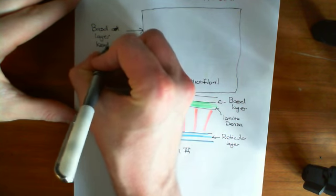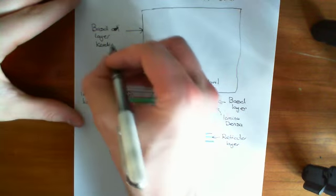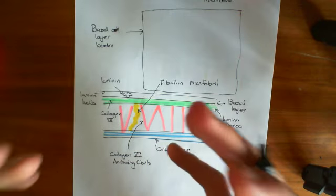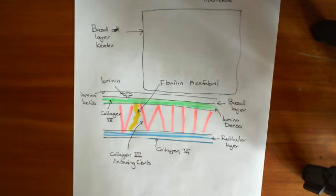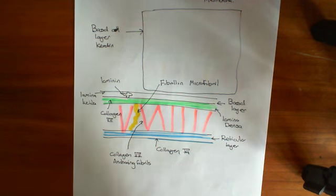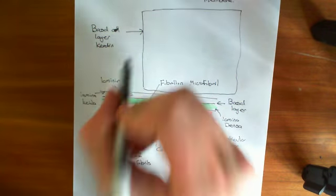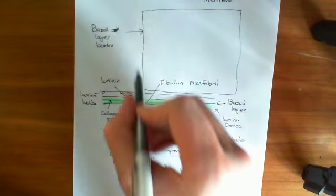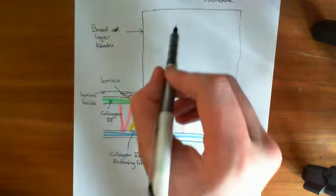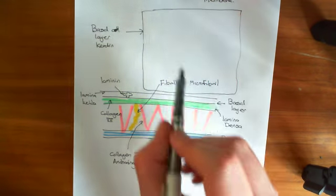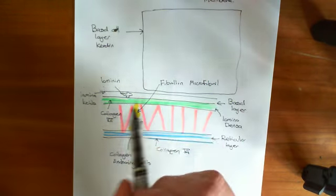We'll talk about all the different layers of the epidermis. The epidermis is a layer of the skin, and the epidermis itself is divided into four different layers, and at parts of the body you have five layers — specifically on the palms and the soles of the feet. But for the moment, we're just discussing how these basal cells are attached to this basement membrane.